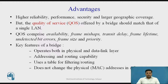The key features of bridges are: a bridge operates in both the physical layer and data link layer, the first two layers of the OSI model. It has addressing and routing capabilities. A bridge uses a table for filtering or routing. A bridge does not change the physical — that is, the MAC — address of a frame.